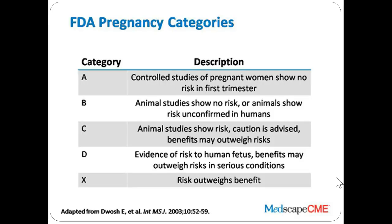The FDA pregnancy categories no longer exist technically. However, all drugs prior to the change in FDA recommendations still carry their letters with them — which is almost every drug on the market. So I still talk about the letters because they're still there. Category A is the best: controlled studies in pregnant women show no risk in the first trimester. There are very few drugs that are actually category A — we don't do randomized control studies in pregnant women unless we already know going in there's virtually no risk.